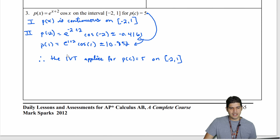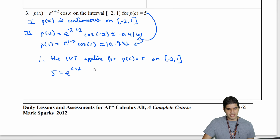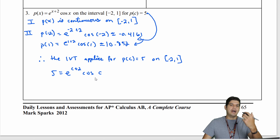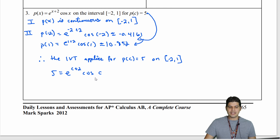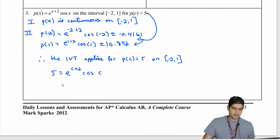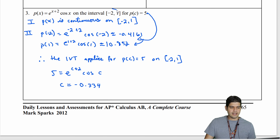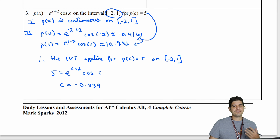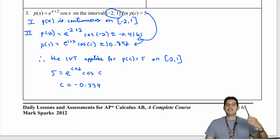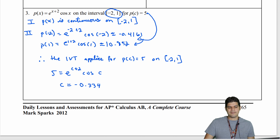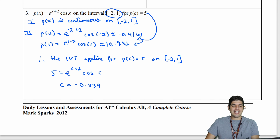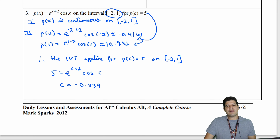Now we need to find the actual value of c. We set p of c equal to 5, so 5 equals e to the c plus 2 times cosine of c. There's no algebraic way to solve this, so we use a graphing calculator to find where the two sides intersect. The value of c comes out to be approximately negative 0.334, which is indeed between negative 2 and 1. First we knew a value existed, then we were able to find it on the calculator.